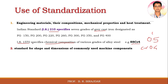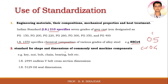The second category of standards covers shapes and dimensions of machine components that we regularly use. Examples include different types of keys — parallel key or taper key — nuts and bolts of hexagonal, square, or other types, chains, bearings, and belts. These are standard components continuously used in any machine, and specified standards have been set for them.